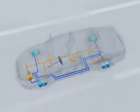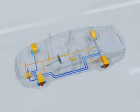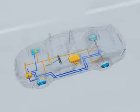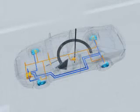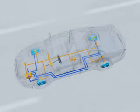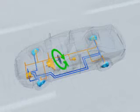ESP comprises the following components: a speed sensor on each wheel, the rotation rate sensor measures the car's rotation around its vertical axis, and the steering angle sensor registers the driver's steering intention.